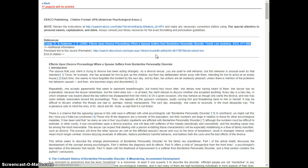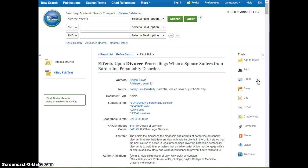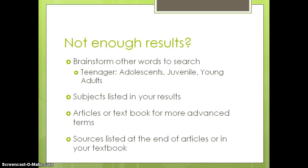If you've done your search and things just aren't coming up, how else can you find more results? If you don't have enough, stop and brainstorm other words to search. For example, if you're searching about teenagers, think of other words like adolescents, juvenile, or young adults. You might also look at the subject terms listed in your results, check articles you've already found or your textbooks for more advanced discipline-specific terms, or look at the reference lists at the end of articles to find more sources.